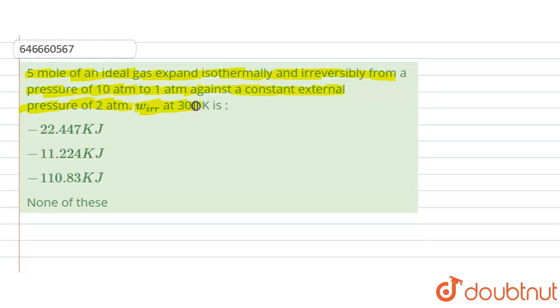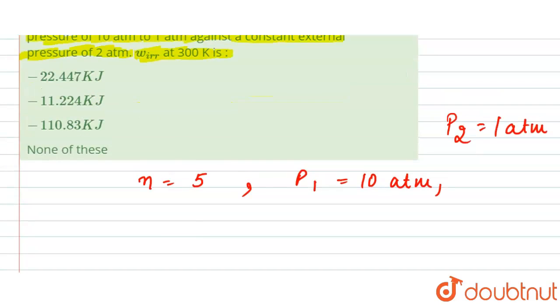Here we are given n equals 5, that is number of moles, and we have the p1 value that is 10 atmosphere, p2 value is 1 atmosphere, and we have the value for p external also that is 2 atmosphere, and the temperature is 300 kelvin.